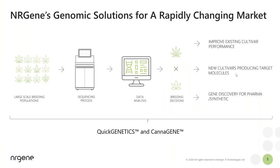The overall view of our genomic solutions takes into account that we look at a large breeding population, either your collection or a population generated after exploring the diversity. We look at sequence data, either generated through us or through others, and we do the data analysis to help you make breeding decisions to improve existing cultivar performance or generate new cultivars that produce target molecules. There are also other tools for gene discovery for the pharma industry or synthetic biology. The main workflow we use is either through Quick Genetics or the Canagene database.